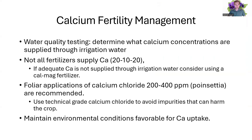For calcium fertility management, water quality testing is the biggest factor. Determine what calcium concentrations are not being supplied through irrigation water, and note that not all fertilizers supply calcium, such as the 20-10-20. If you're not supplying it through irrigation water or your fertilizer, you're going to run into problems and need to consider a CalMag. Foliar applications of calcium chloride are an option — 200 to 400 ppm on a poinsettia is recommended — and when doing a calcium chloride foliar application, we need to use technical grade calcium chloride to avoid impurities that can harm the crop. Maintaining environmental conditions favorable for transpiration is crucial.